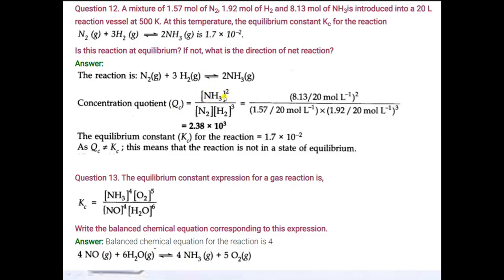Write the formula of Qc: concentration of product divided by concentration of reactant, with number of moles as powers. Divide number of moles by volume (20 L) to get concentrations and substitute. Qc is calculated to be 2.38×10³. The given Kc is 1.7×10⁻². These values are not equal.